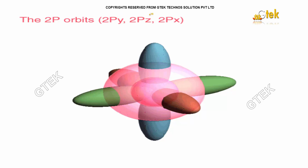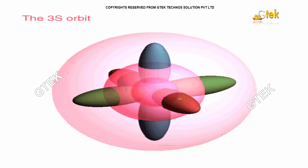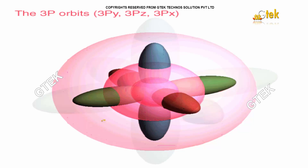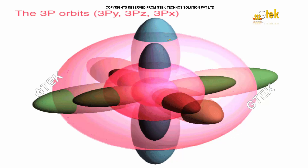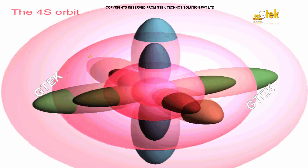The 2P-orbital has three directions: one is the X-axis, the other one is the Y-axis, and the other one is the Z-axis. Around your 2P-orbital, you have your 3S-orbital. Around the 3S-orbital, you have your 3P-orbital — 3P-Y, 3P-Z, and 3P-X. Now I have my 4S-orbital. This is how the orbital and the revolution of electrons in an atom works.